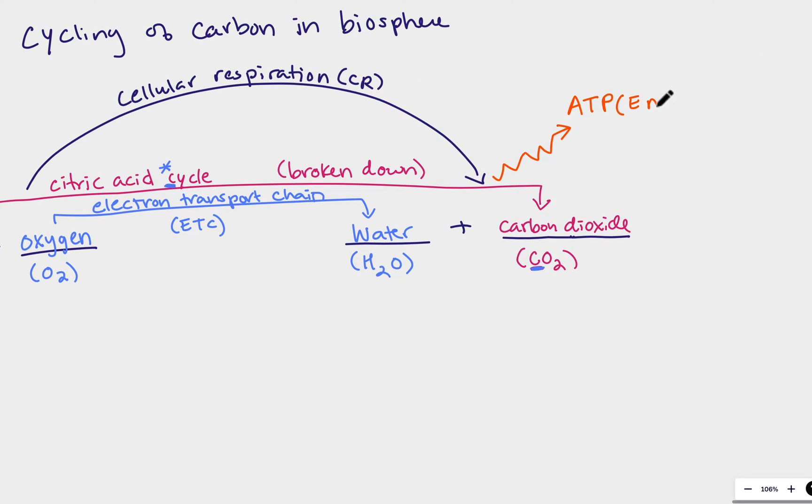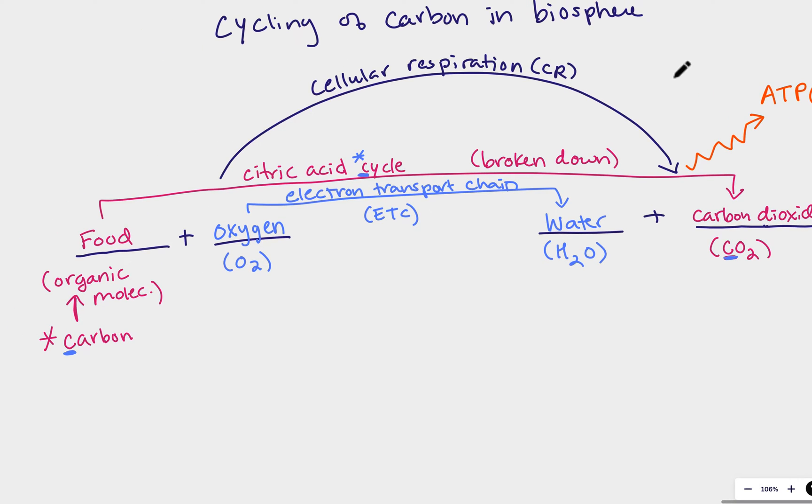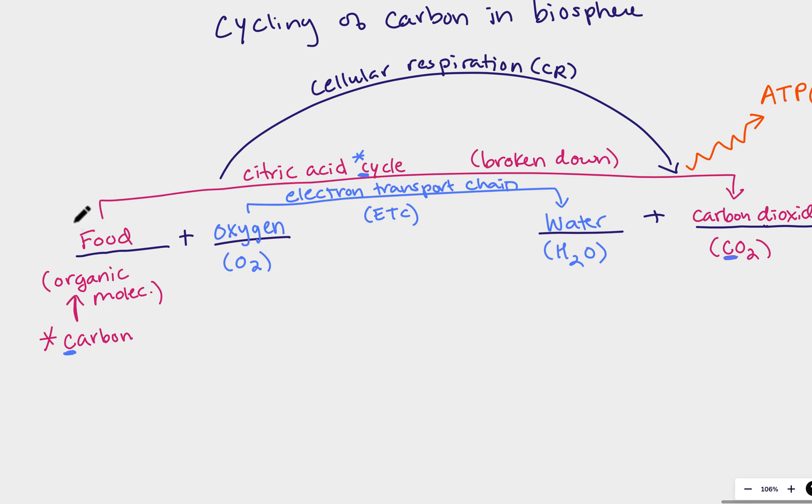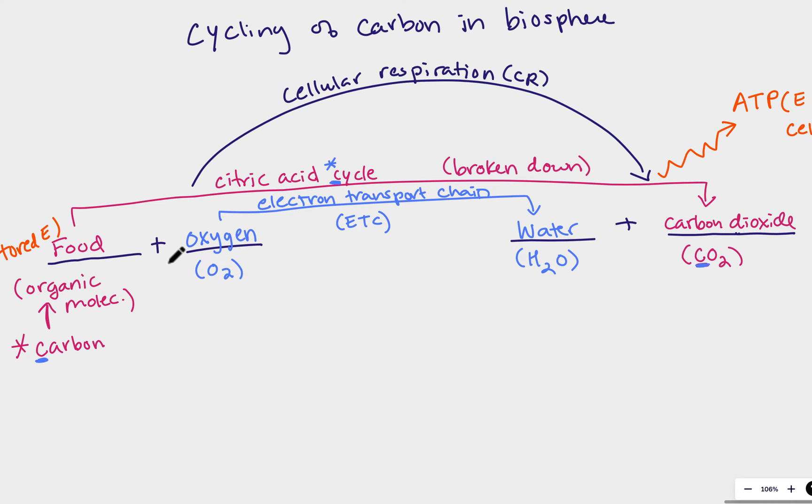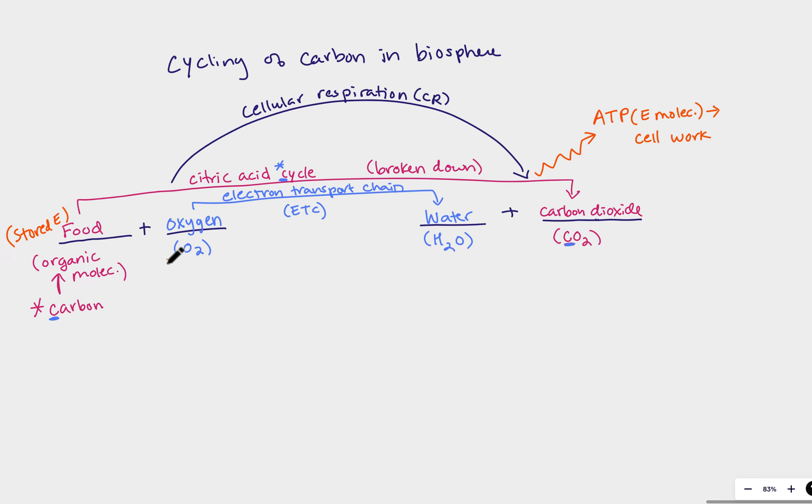And it's used to do cellular work. So where did the energy start? It ends up in ATP. It starts in food. So we've got the energy stored in the food and that is converted to energy stored in ATP.